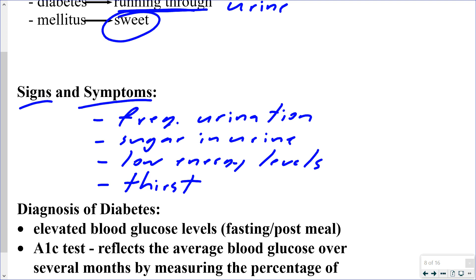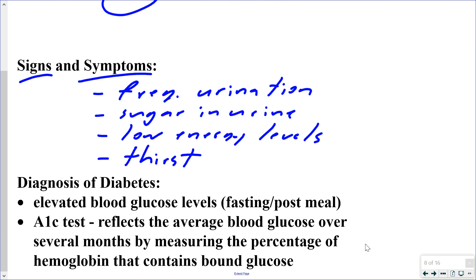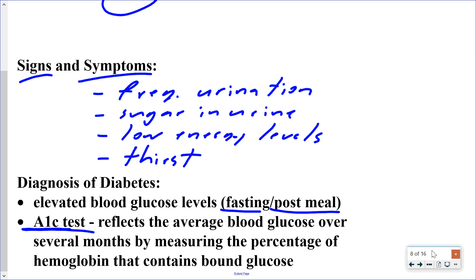To diagnose diabetes, doctors monitor blood glucose when fasting and after meals to check for large fluctuations, which shouldn't occur — levels should remain within approximately four to seven millimoles per liter. They can also use the A1C test, which gives an average blood glucose reading over several months, to determine if someone has had prolonged high levels of blood glucose.